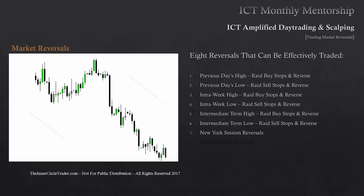That occurs when markets trade into a higher timeframe premium array. Or the reverse is seen when London starts trading lower, creates the high of the day, then New York creates the low of the day, reverses, and closes higher. Everything mentioned for New York session reversals also applies to London Close, but also intraday on large range days. When the five-day average daily range is exceeded and we get into 10 o'clock and 11 o'clock in the morning New York time, you can anticipate a London Close reversal for an intraday scalp, where price will want to come back a certain measure of that range.